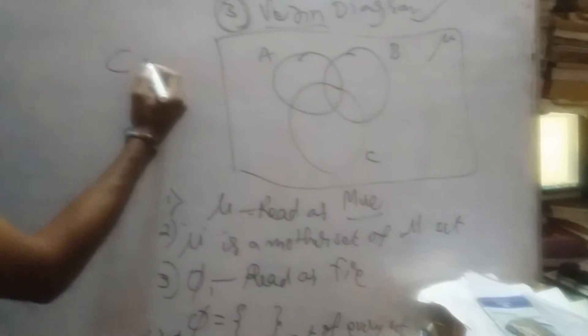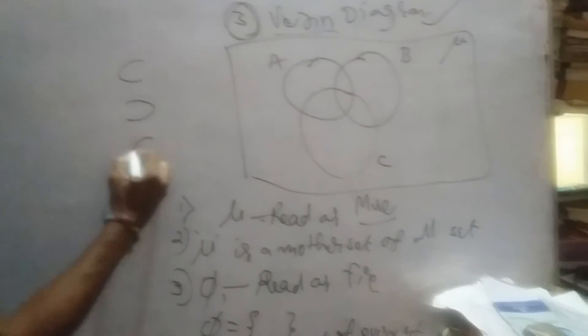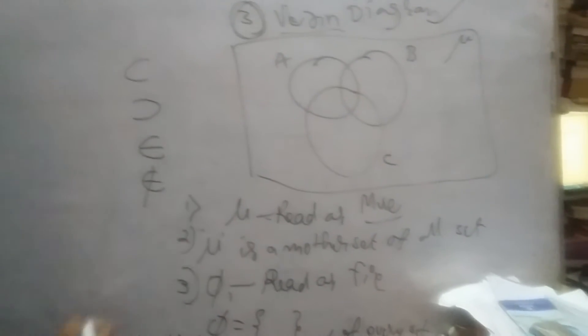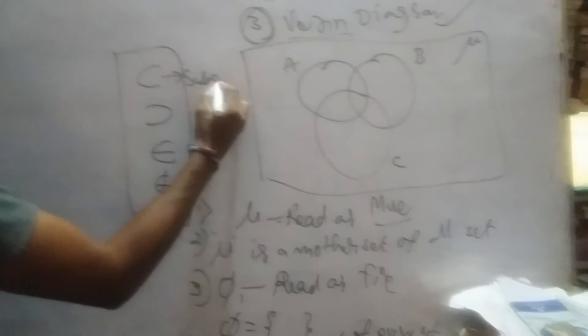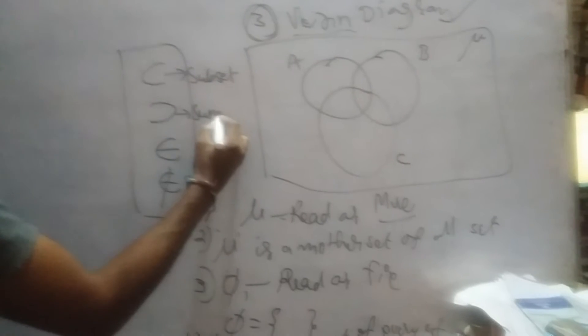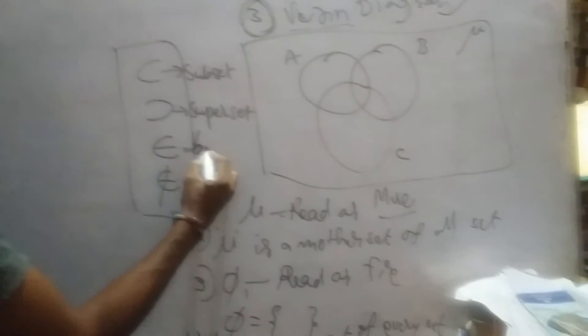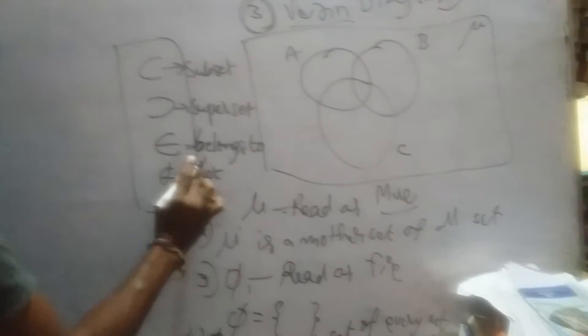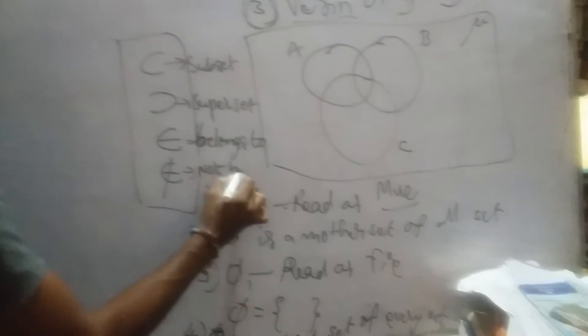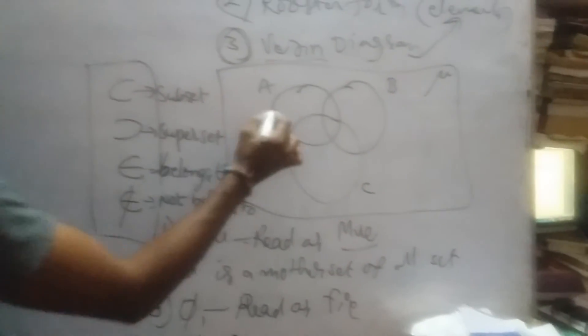The subset symbol means subset. This symbol means superset. This symbol means belongs to. This symbol means not belongs to. These are the symbols we will use. The subset symbol, superset symbol, belongs to, and not belongs to.